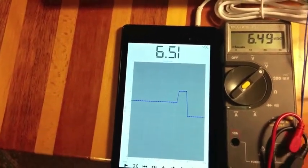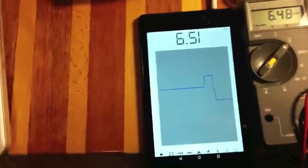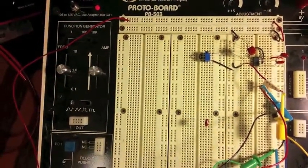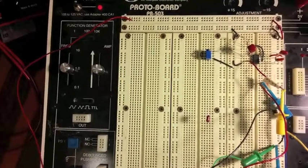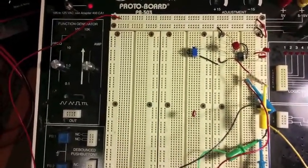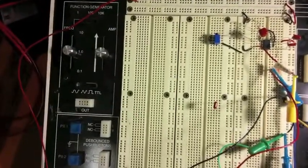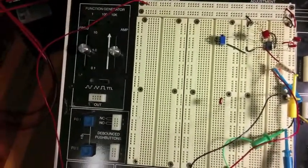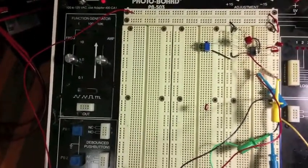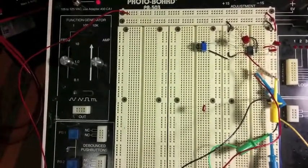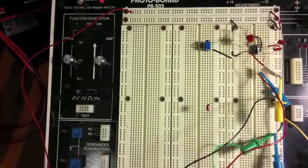There you have it. Again, fairly simple. The app, free. The circuit, simple. The devices are all pretty inexpensive. Not a big challenge. All the information is available on the website for the app. Again, it's DC voltmeter. And I hope you try it, and hope the results that you get are useful for you.